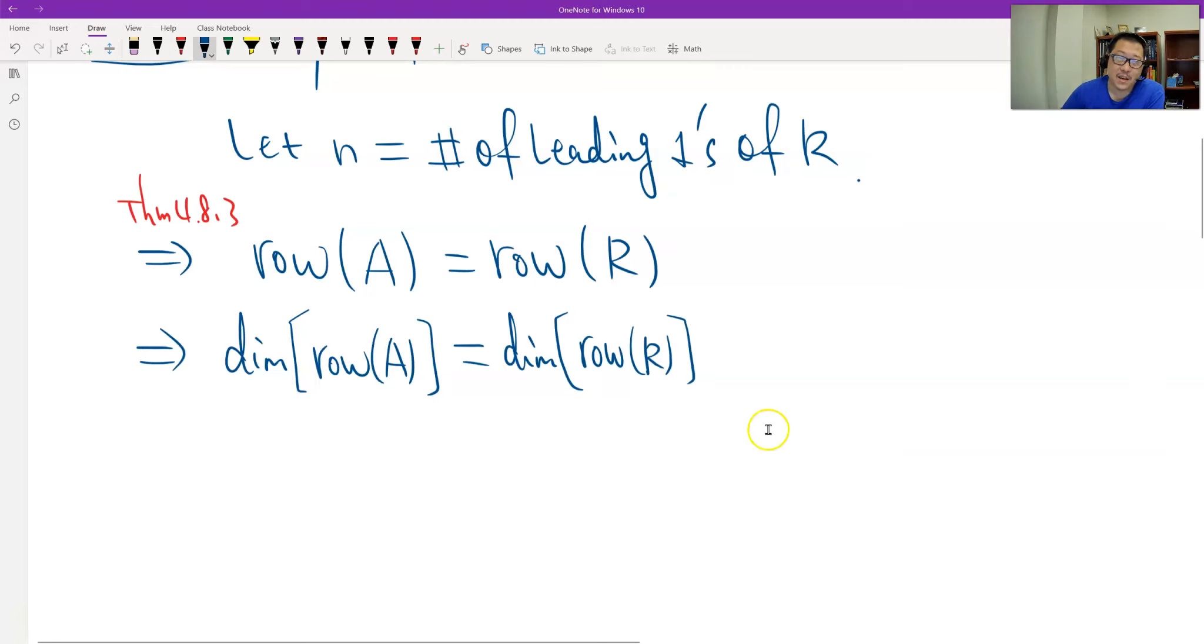And what is the dimension of the row space of A reduced row echelon? We do have a result before, which is theorem 4.8.4 that tells us the dimension of the row space exactly equals the leading ones.